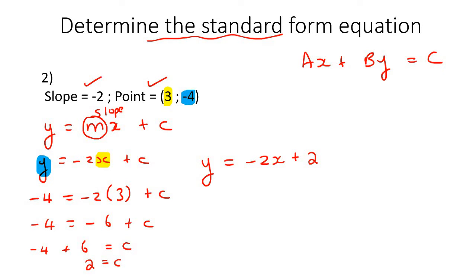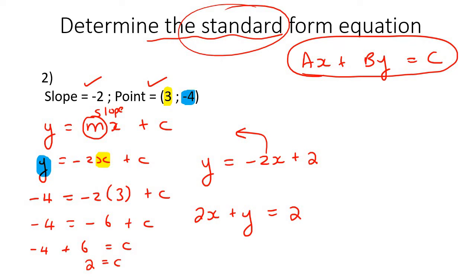So now we can say that the slope-intercept form is Y equals to negative 2X add 2. Now, remember, the question is asking for standard form, which is this one. So what we'll do is we'll take this 2X over where it will become positive, and there we're done, because the X is positive, the X and Y are on the left together, and then we have another number there.